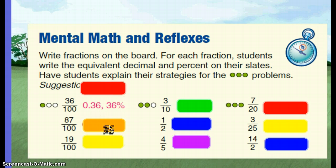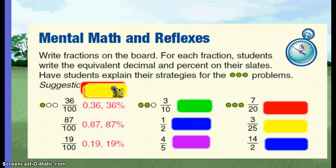87 hundredths. Very good, 0.87 and 87 percent. 19 hundredths. 0.19 or 19 percent.